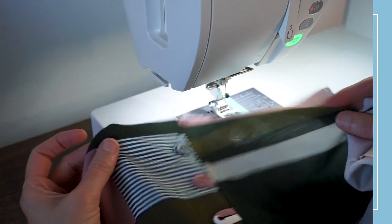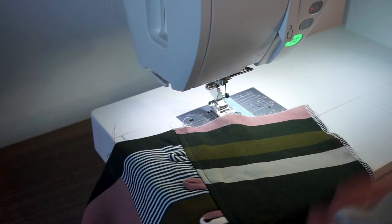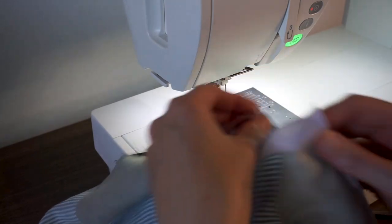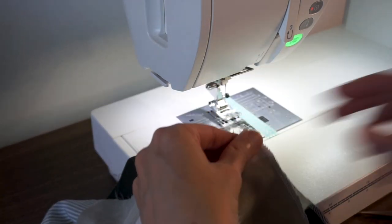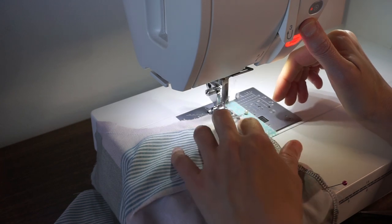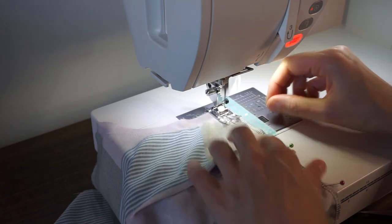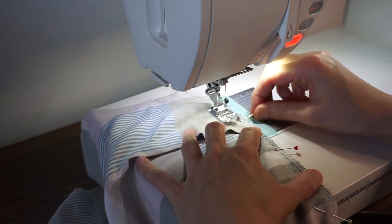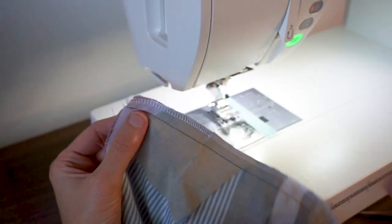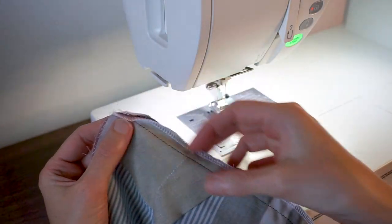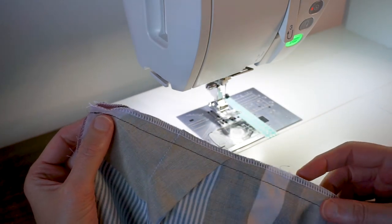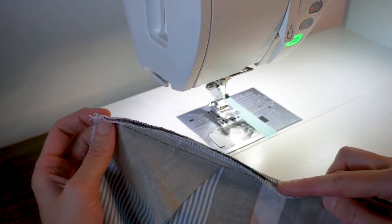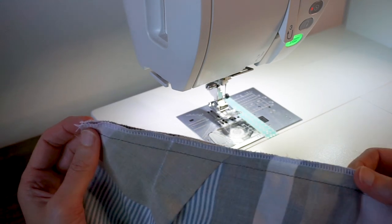Now we're ready to stitch the back to the front. Putting these right sides together, tops up, we'll just pin the side seam and stitch. You'll want to repeat for the other side and finish the seam allowance if you haven't already, and then press the seam open or to the back.